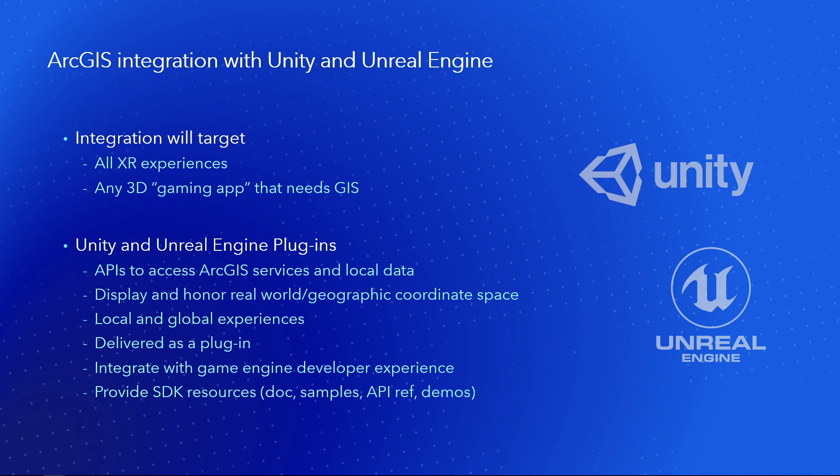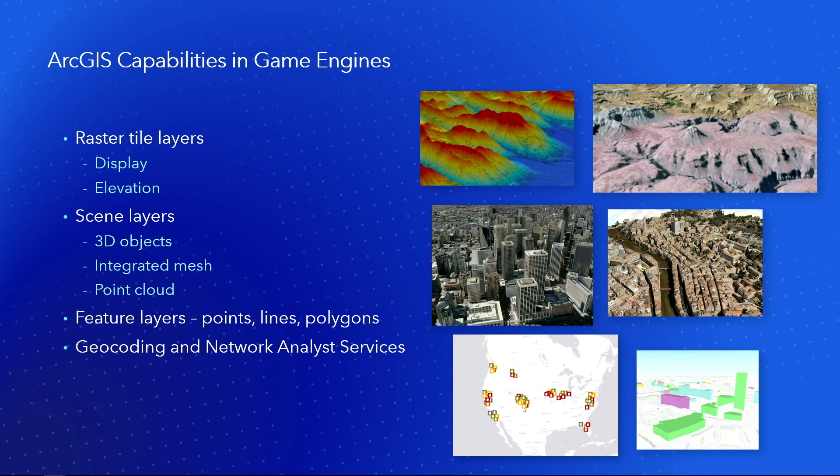In terms of ArcGIS functionality, you'll be able to work with raster tiles, imagery, elevation, scene layers with 3D objects and integrated meshes, and point clouds. Feature layers will be supported with points, lines, and polygons. You'll also be able to access other services like geocoding and networking.